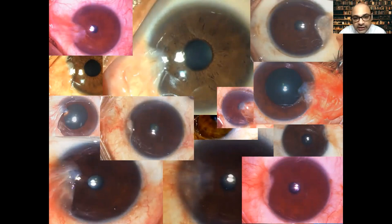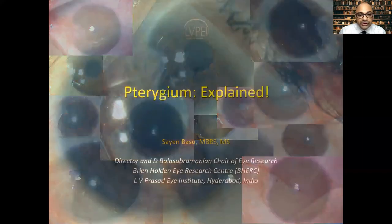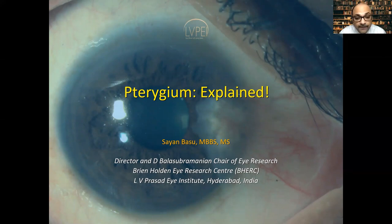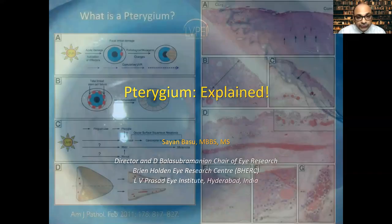Hello everyone and welcome back. One of the requests I had when I was doing the series of explained talks was to discuss pterygium, which is a fairly common pathology that all of us see almost every day in our patients. Today's lecture will cover why a pterygium occurs, its essential pathological nature, how it differs from pseudo-pterygium or recurrent pterygium, and why it recurs after excision — and how understanding that helps us minimize recurrences.